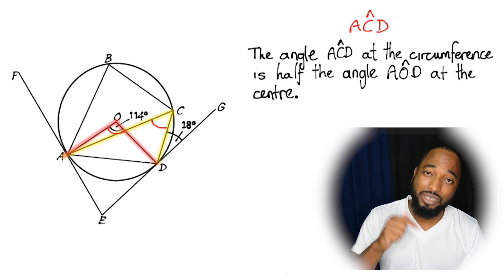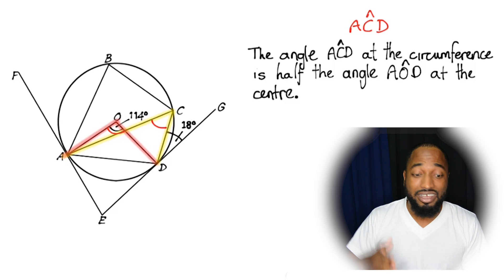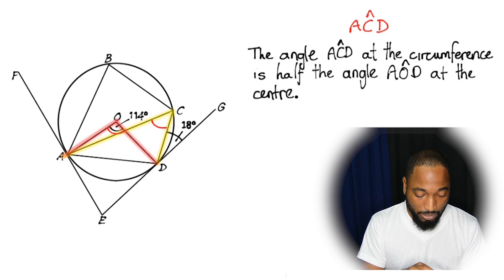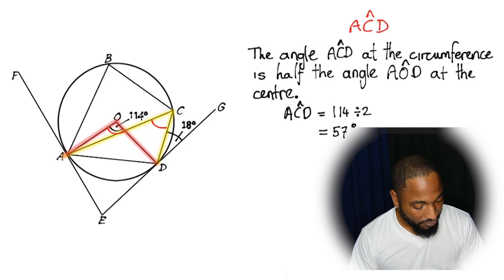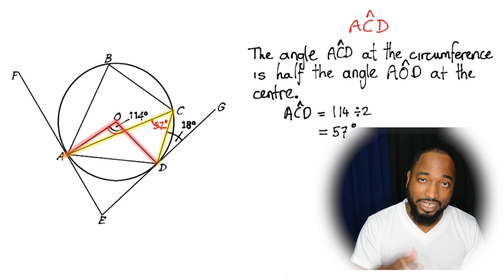Remember everything drawn in these diagrams are not drawn to scale. Sometimes there's an angle looking like 90 degrees, but it's not. Sometimes there's an angle that doesn't look like 90 degrees, but it is you need to use your rules and pick it out. So ACD is equal to 114 divided by 2, 57 degrees. Of course anytime you find out an angle write it into the diagram.